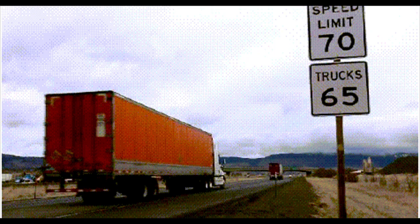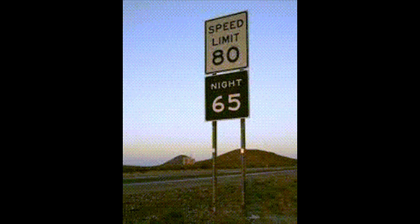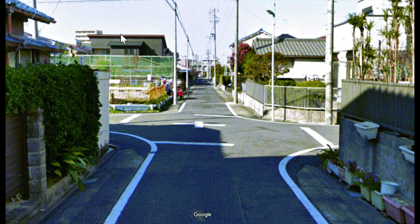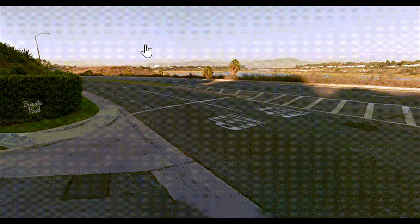Trucks and other heavy commercial vehicles may have different speed limits. Some areas may have special speed limits posted for nighttime driving. The speed limit for a blind intersection in Nevada is 15 miles per hour. An intersection is considered blind if there are no stop signs at any corner and you cannot see for 100 feet in either direction during the last 100 feet before crossing.